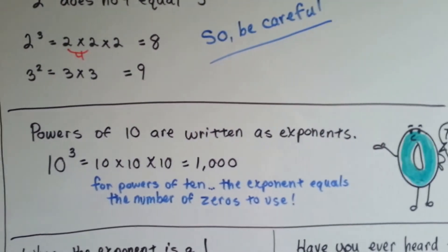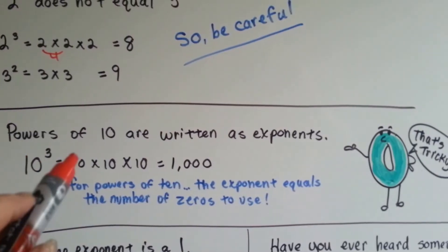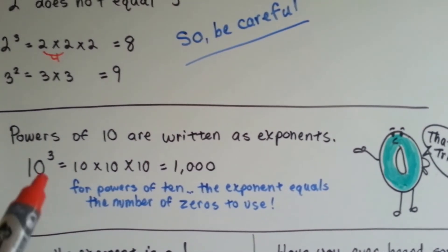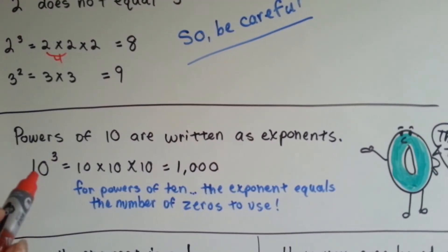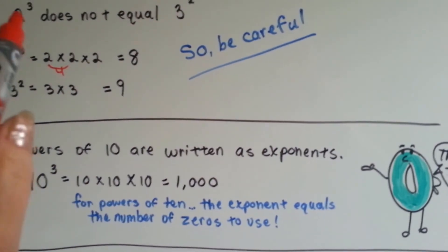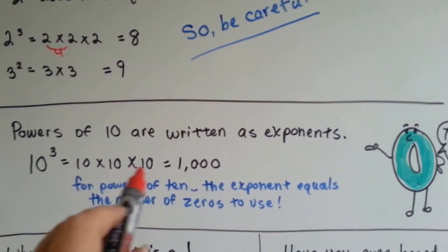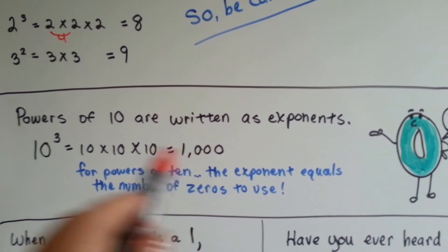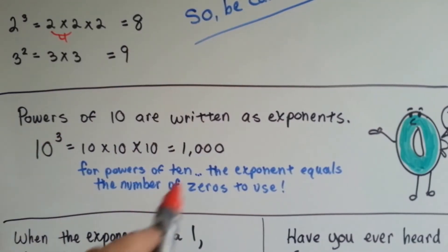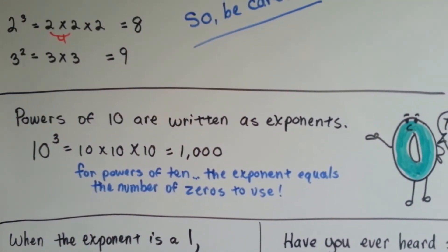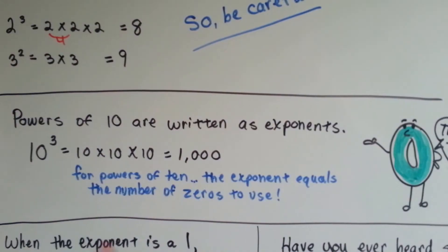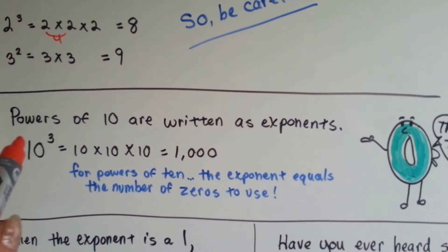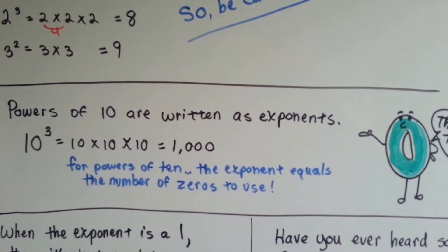Powers of 10 are written as exponents. 10 to the 3rd power means 10 times 10 times 10. Here's a cool trick: for powers of 10, whatever the exponent is, you make a 1 followed by that many zeros. So 10 to the 5th power is a 1 with 5 zeros, and 10 to the 7th power is a 1 with 7 zeros.